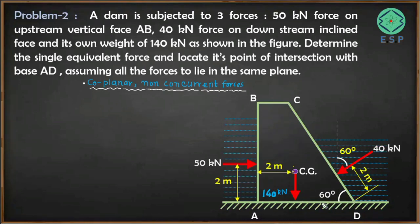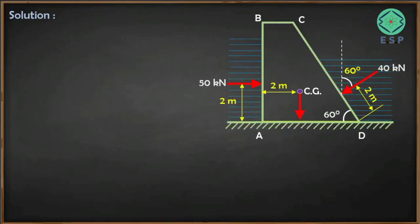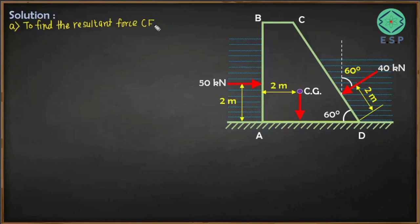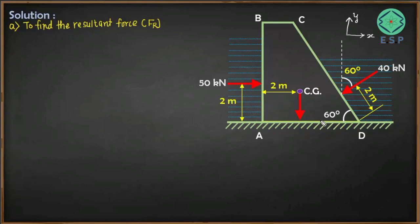We have to find the resultant force and its location with respect to base AD — where the resultant force intersects base AD. For coplanar non-concurrent forces there will be a resultant force as well as a resultant moment. First we will find the resultant force by resolving each force along x and y directions.